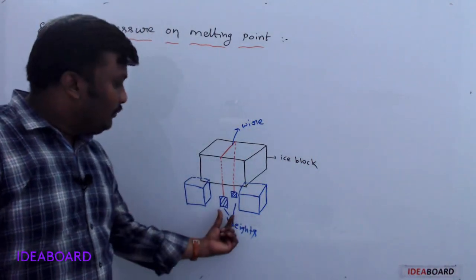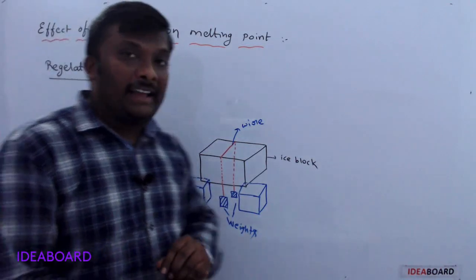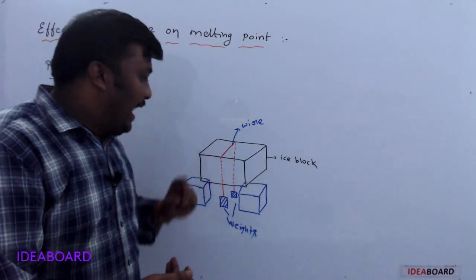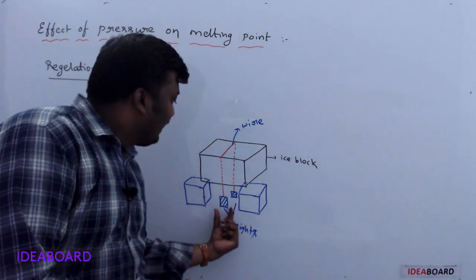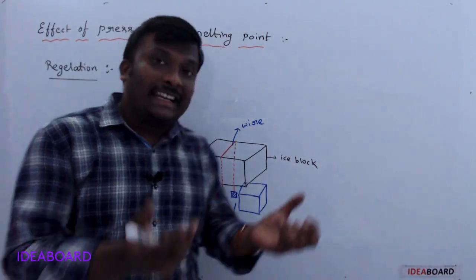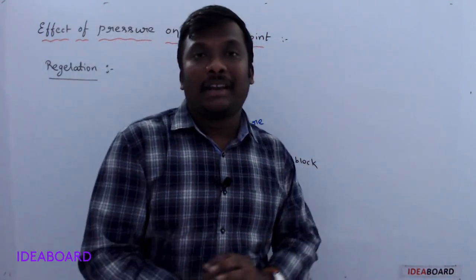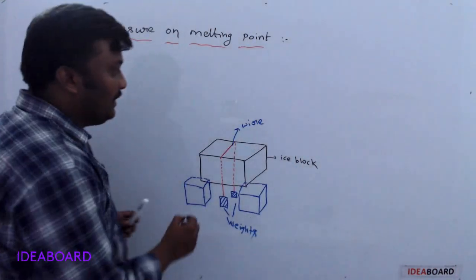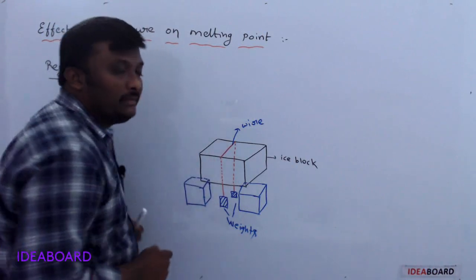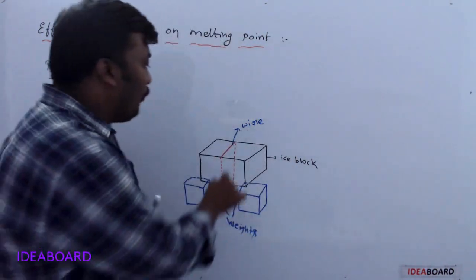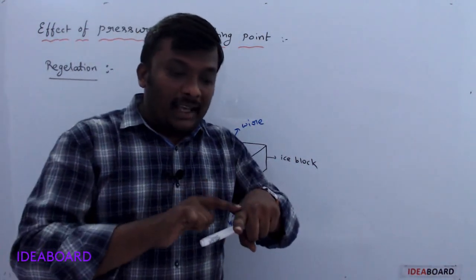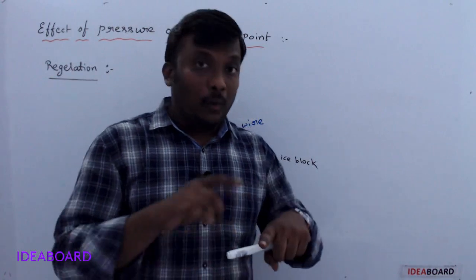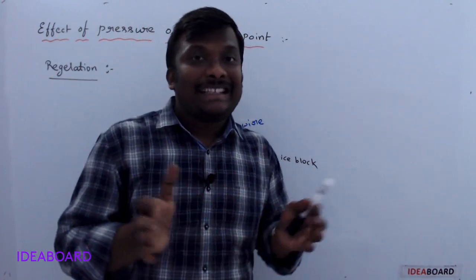It is observed that the wire passes through the ice block. Why? Because at the ends of the wire we hang weights. Due to the weights, pressure increases. Whenever pressure increases, the melting point of ice decreases. That's why the ice just below the wire melts, and the wire passes through. Above the wire, we now have water, and that water immediately freezes again.